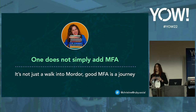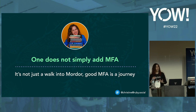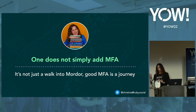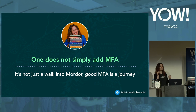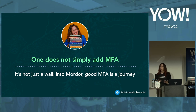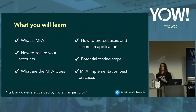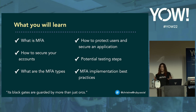Hi everyone. At YOW Brisbane, we're continuing our Lord of the Rings theme. You might have heard from Eno's keynote yesterday, or checked out Dave's 'one rule to rule them all.' Now we can talk about how one doesn't simply add MFA. We're going to talk about our multi-factor authentication journey. What I want you to take from this is what MFA is, how to secure your accounts, the different types available, and how we can help our users, our applications, and potential testing steps and best practices.